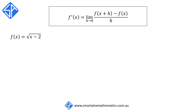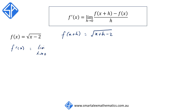Here we've got the function f of x is equal to the square root of x minus 2. This means that f of x plus h would be equal to the square root of x plus h minus 2. Using the definition, f dash x is equal to the limit as h approaches 0 of the square root of x plus h minus 2, minus the square root of x minus 2 — that's f of x — all divided by h.